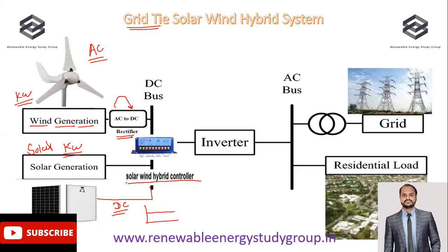In the hybrid controller, we connect the two wires of the solar power plant and also the wires of the wind turbine, feeding electricity in the form of direct current. The controller's role is to balance the overall system of wind generation and solar generation, and then supply a stable amount of power to the inverter. The inverter converts the direct current into alternating current so that consumers can utilize home appliances and loads.